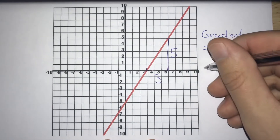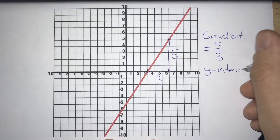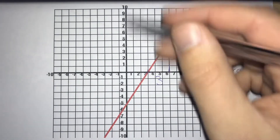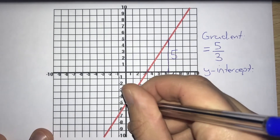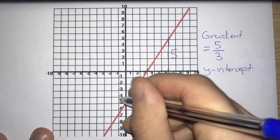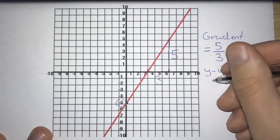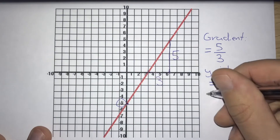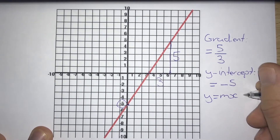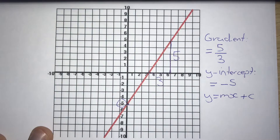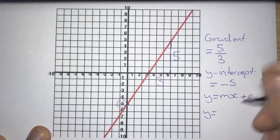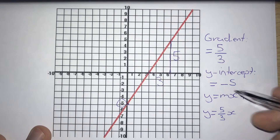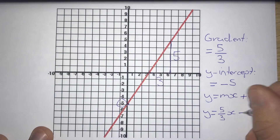Then let's look at our y-intercept. This is just going to be where this red line crosses our y-axis. In this case, it's crossing it here, where our y-value is minus 5. So our y-intercept for this one is going to be minus 5. Putting it into y equals mx plus c, where m is our gradient and c is our y-intercept: y is equal to 5 over 3x, and since we've got a negative y-intercept, it's going to be minus 5.